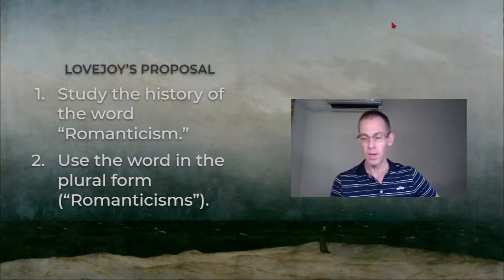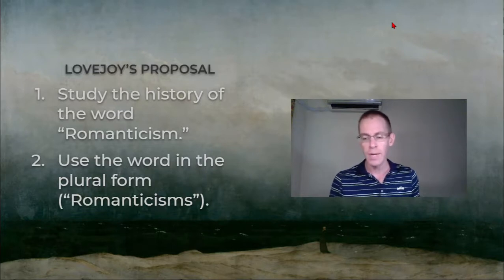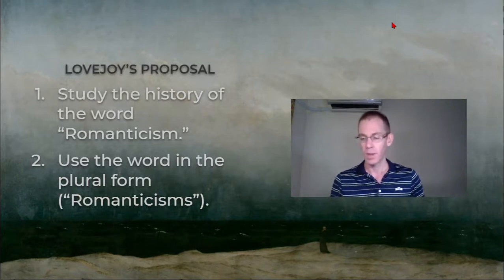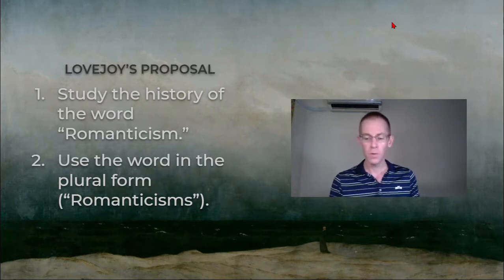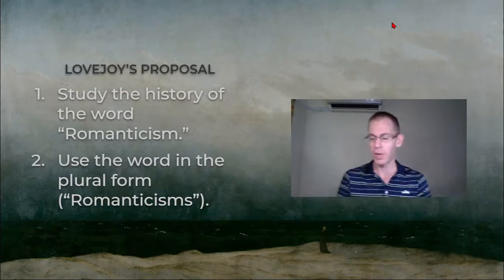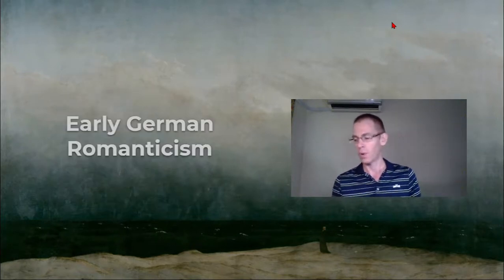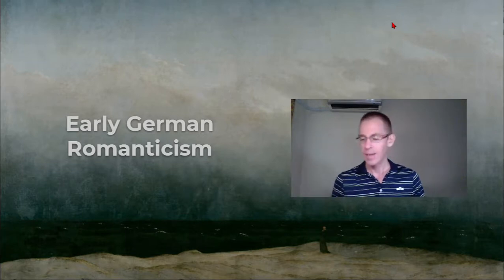It seems pretty clear, though, that if romanticism is supposed to refer to something very unique, it's to that movement that began in Germany in the 1790s. In fact, the writers who were part of that movement were the first to call themselves romantic. So most of Lovejoy's own writings on romanticism focus on this period, on the 1790s, and what was intellectually unique about it. So let's look at what Lovejoy thought were the main distinctions of 1790s romanticism, or say early German romanticism.